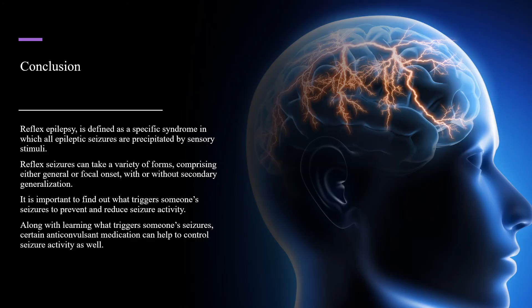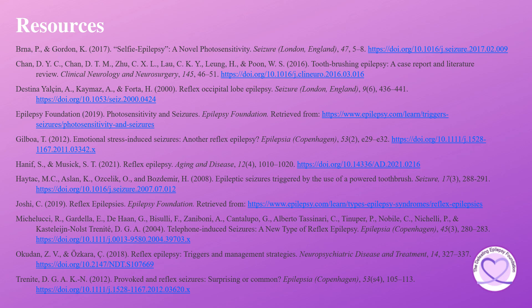In conclusion, reflex epilepsy is defined as a specific syndrome in which all epileptic seizures are precipitated by sensory stimuli. Reflex seizures can take a variety of forms comprising either general or focal onset, with or without secondary generalization. It is important to find out what triggers someone's seizures to prevent and reduce seizure activity. Along with learning what triggers someone's seizures, certain anticonvulsant medications can help to control seizure activity as well. To learn more about reflex epilepsy, please check out the resources used in the presentation.